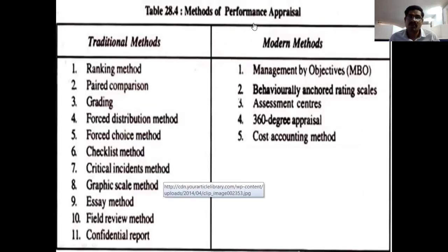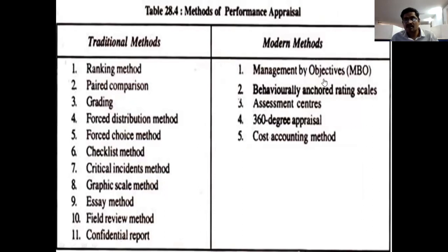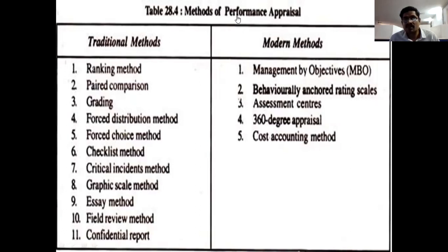Already we discussed performance appraisal methods: ranking method, paired comparison, grading, forced distribution, forced choice, checklist, critical incident method, graphical rating scale, field review — these are traditional methods. Modern methods include MBO (target-based activities), BARS (behaviorally anchored rating scale), assessment centers, 360-degree rating method, and cost accounting or HR accounting methods. These are used to check the performance of each and every employee, which is called performance appraisal.